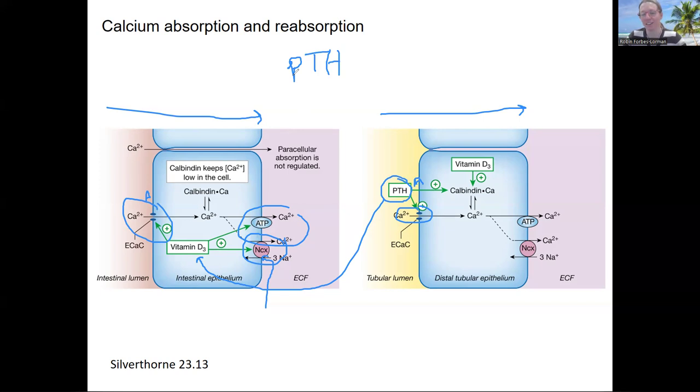So absorption in the intestine, again, a little more complicated because vitamin D is involved there as well. Well, vitamin D is involved in the kidney as well, but a little bit differently. And in either case, increasing absorption, increasing reabsorption, we've got increased calcium in the blood.